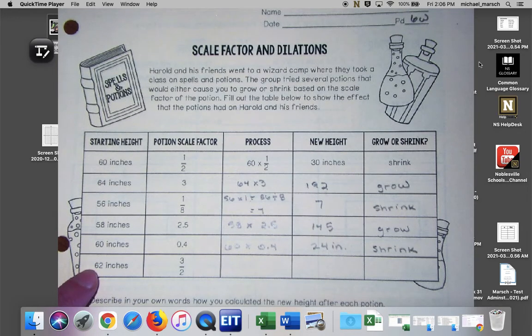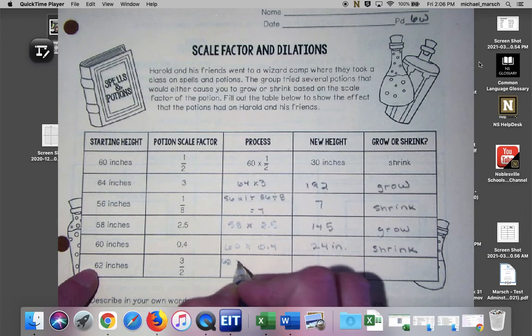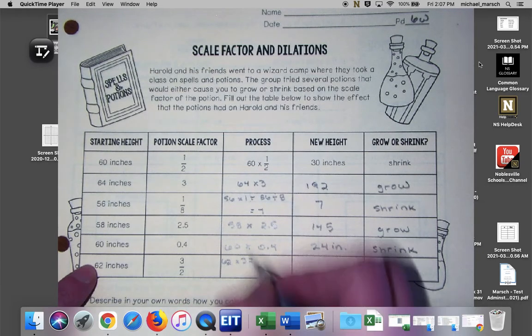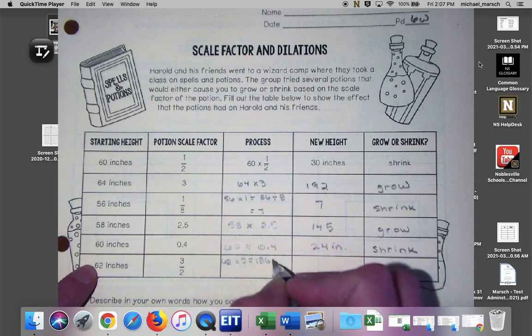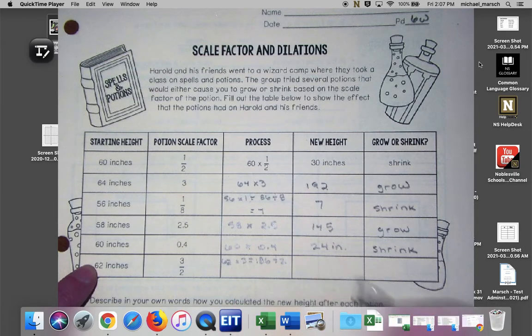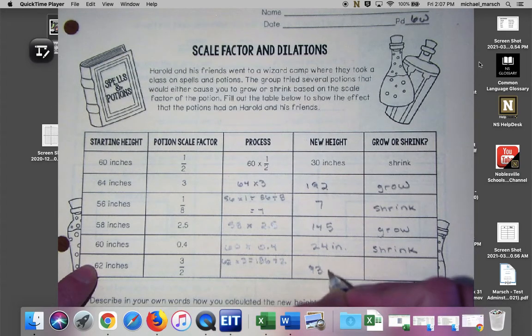Then I've got 62 inches so I'm going to do 62 times 3 and I get 186, and then take that divided by 2 and I get 93 inches.